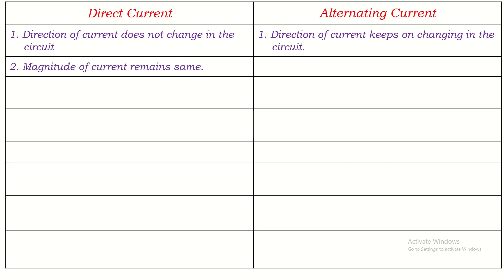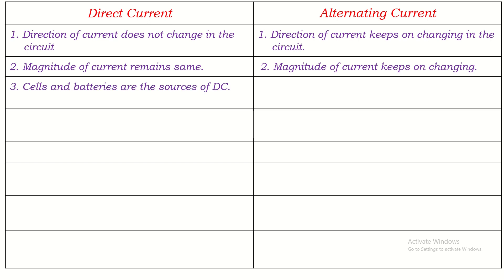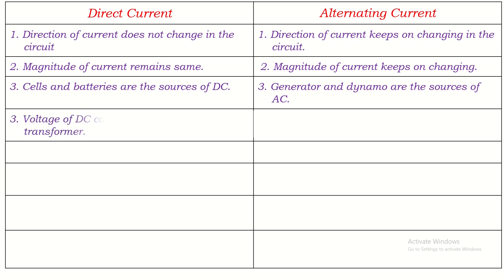The magnitude of current remains the same in the case of direct current, but the magnitude of current keeps on changing in the case of alternating current. Cells and batteries are the sources of DC, so we get DC from cells and batteries. But generators and dynamos are the sources of AC — we get AC from generators and dynamos.